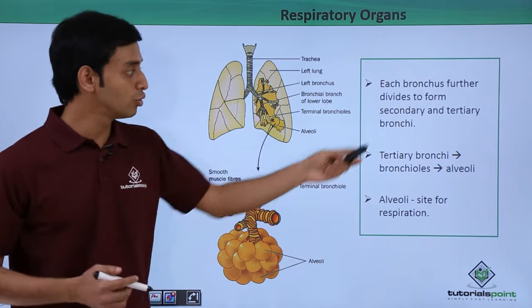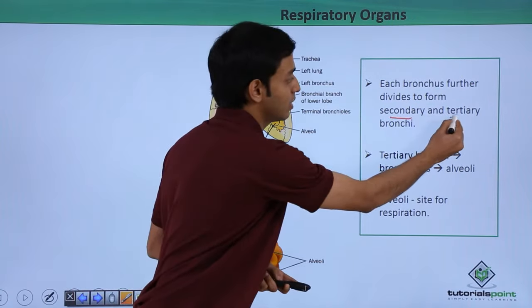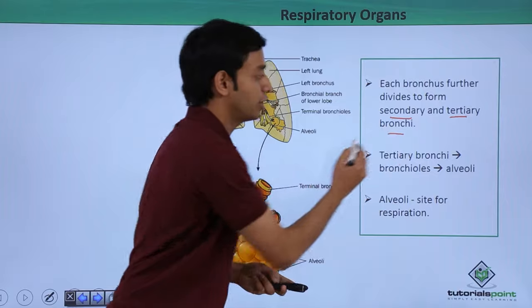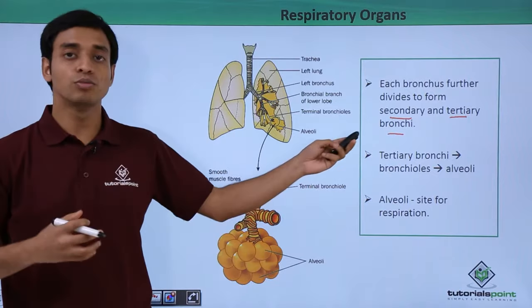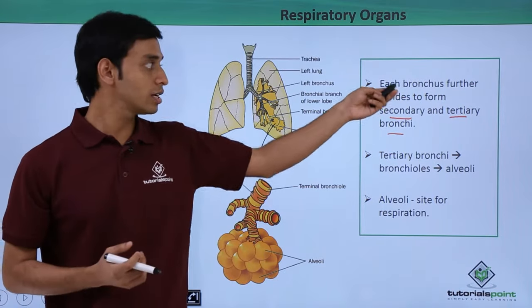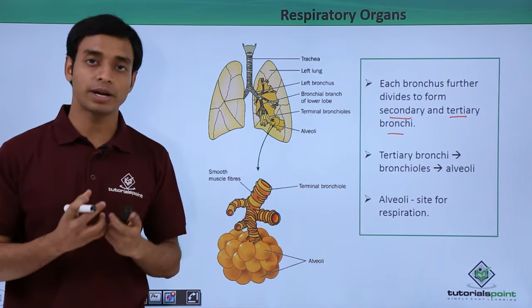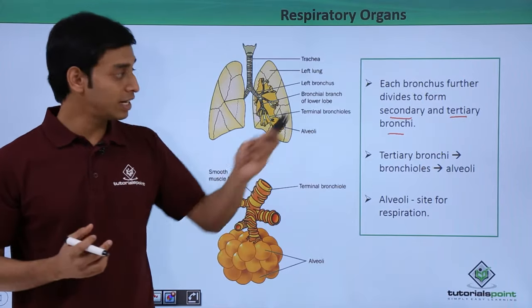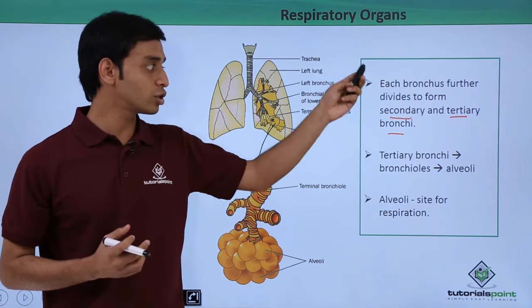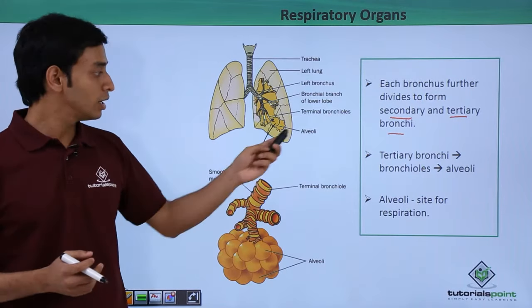Each bronchus further divides repeatedly, branching to form the secondary and tertiary bronchi. More branching occurs from the primary bronchi, leading to the formation of secondary and tertiary bronchi.